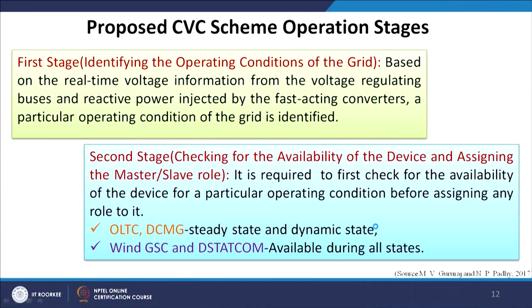It is required to first check the availability of the device for a particular operating condition before assigning any role. For example, OLTC and DC microgrid are used during steady state and dynamic state, whereas wind generators and DSTATCOMs are available throughout all three states. The final step involves introducing a time delay in operation — if you want a slow device to act before fast devices, a delay in action on those fast devices can be incorporated so that slow devices inject reactive power first.